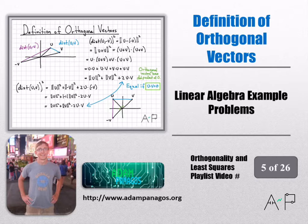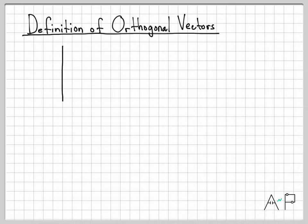Now that we've defined the norm of a vector and the distance between two vectors, we can talk about the definition of orthogonality. What does it mean for two vectors to be orthogonal?